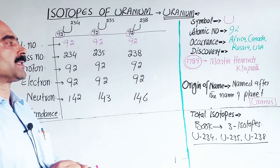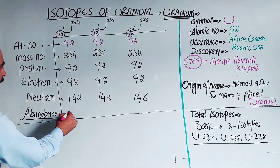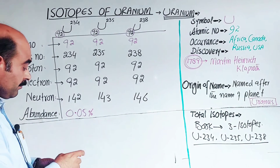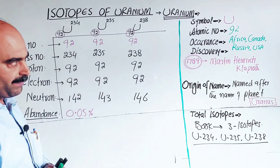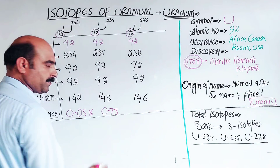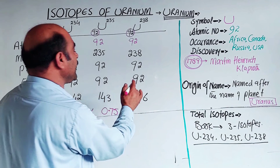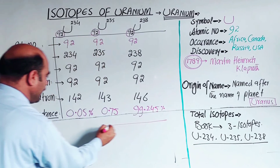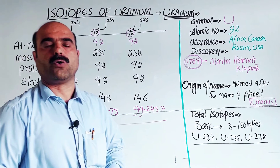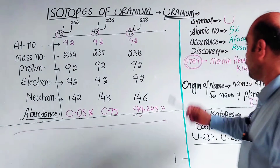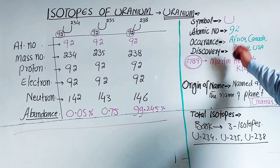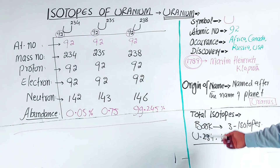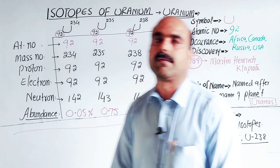Regarding natural abundance: uranium-234 has a natural abundance of approximately 0.005 percent; uranium-235 has a natural abundance of approximately 0.72 percent; and uranium-238 has a natural abundance of approximately 99.27 percent — so it naturally occurs at around 99.245 percent. These were all about the isotopes of uranium, covering the symbol, atomic number, occurrence, discovery, scientist name, origin of name, and the three main isotopes in detail. Thanks a lot for watching the video.